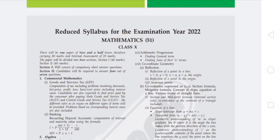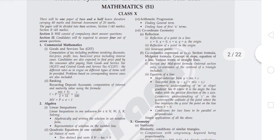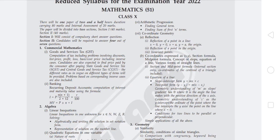Coordinate Geometry includes reflection of a point in lines x = 0, y = 0, x = a, y = a, the origin, and reflection of a point in the origin.